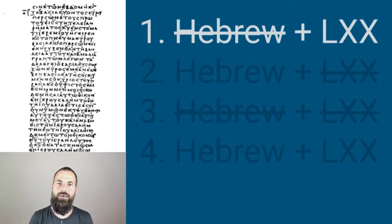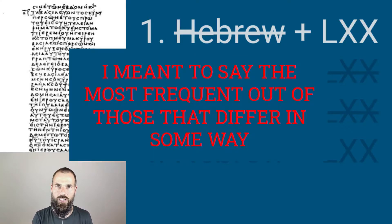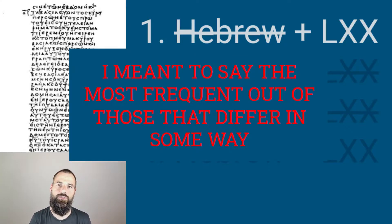Looking at these four categories and how frequently they occur in the New Testament, we can see that the New Testament authors show a clear preference for the Septuagint. When there is a difference between the Septuagint and the Hebrew text in a passage they are quoting, they much more frequently use the Septuagint over the Hebrew text.